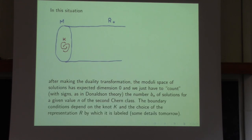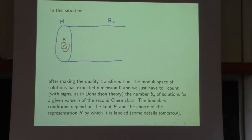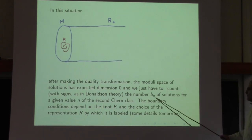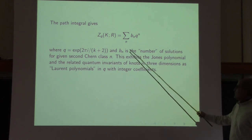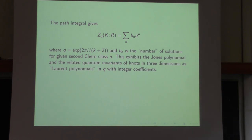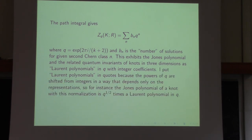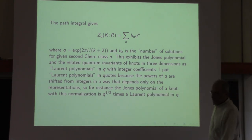The dual boundary condition was described by Gaiotto and Witten a few years ago. After making the S-duality transformation, the moduli space of solutions has expected dimension zero, and we just count the number of solutions for a given value of the second Chern class. As usual in Donaldson theory, the count is made with signs. The boundary conditions depend on the knot K and the choice of representation R. The path integral localization tells us that the path integral is the sum over n of q^n times the number of solutions. This exhibits the Jones polynomial and related quantum invariants of knots as Laurent polynomials in q with integer coefficients.